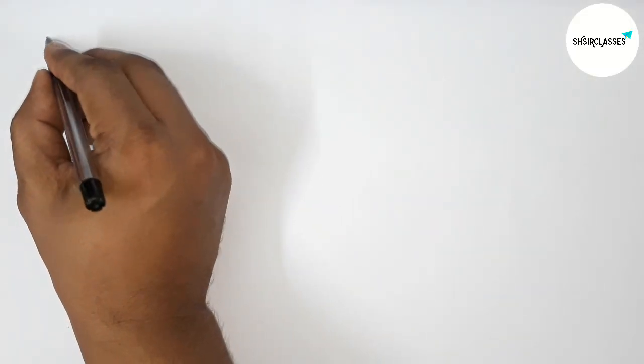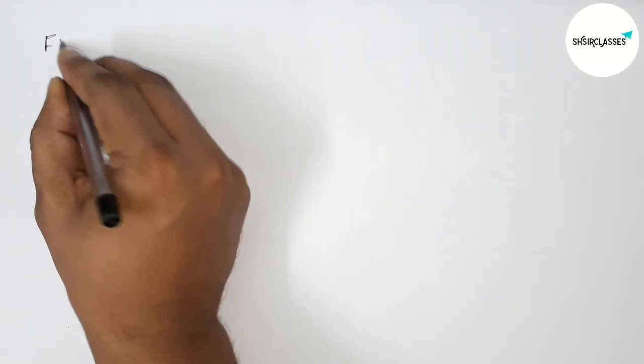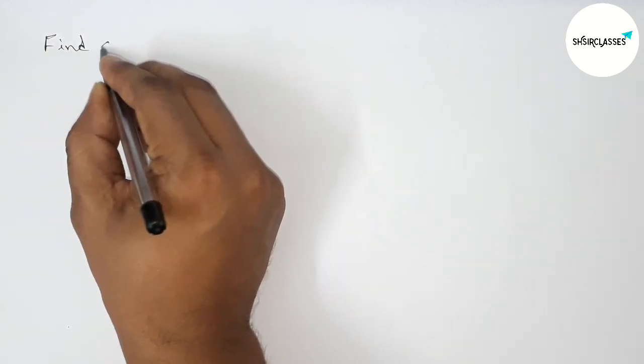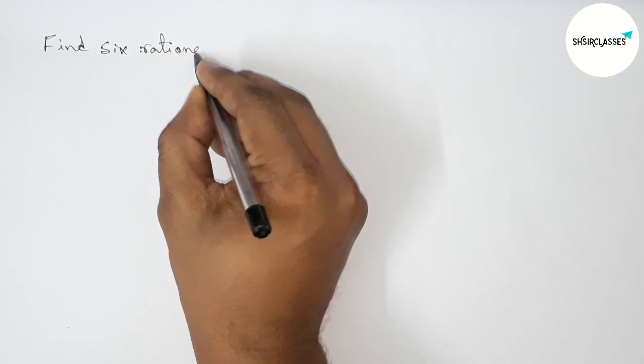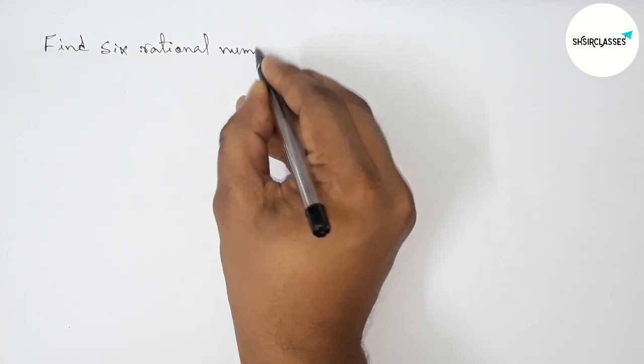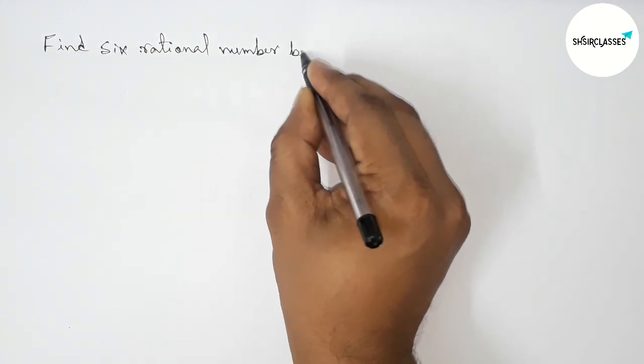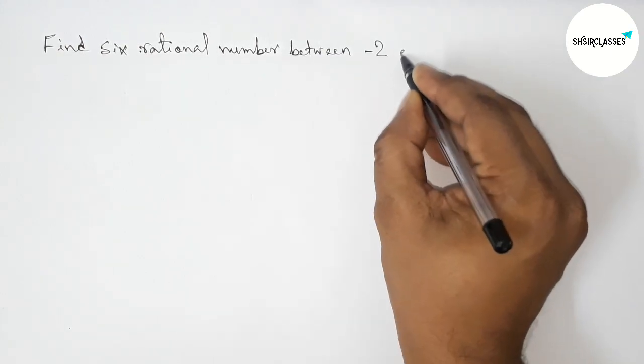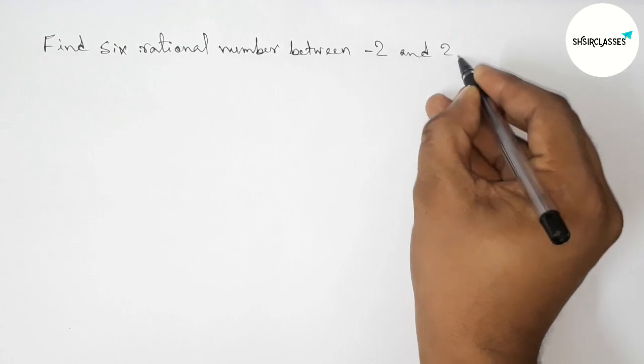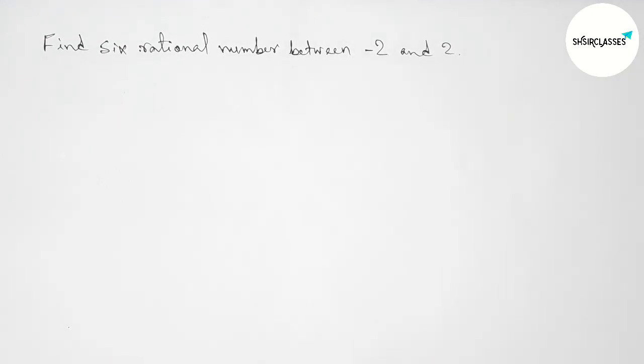Hi everyone, welcome to SI share classes. Today in this video we have to find six rational numbers between minus two and two in easy way. So please watch the video till the end, so let's start the video.